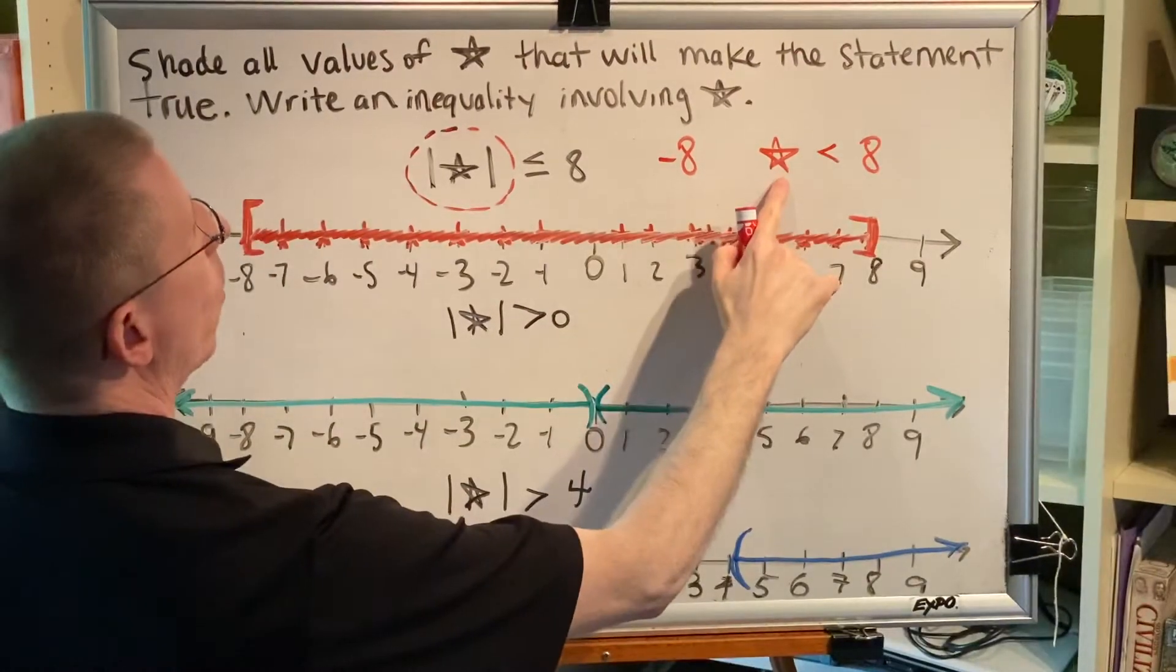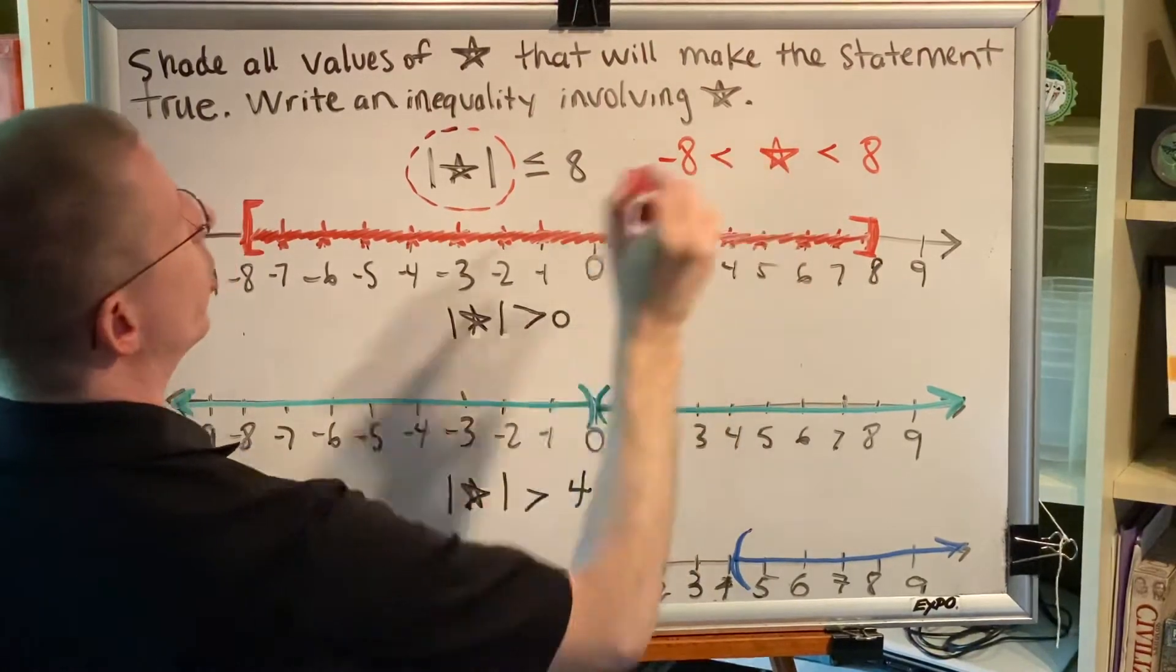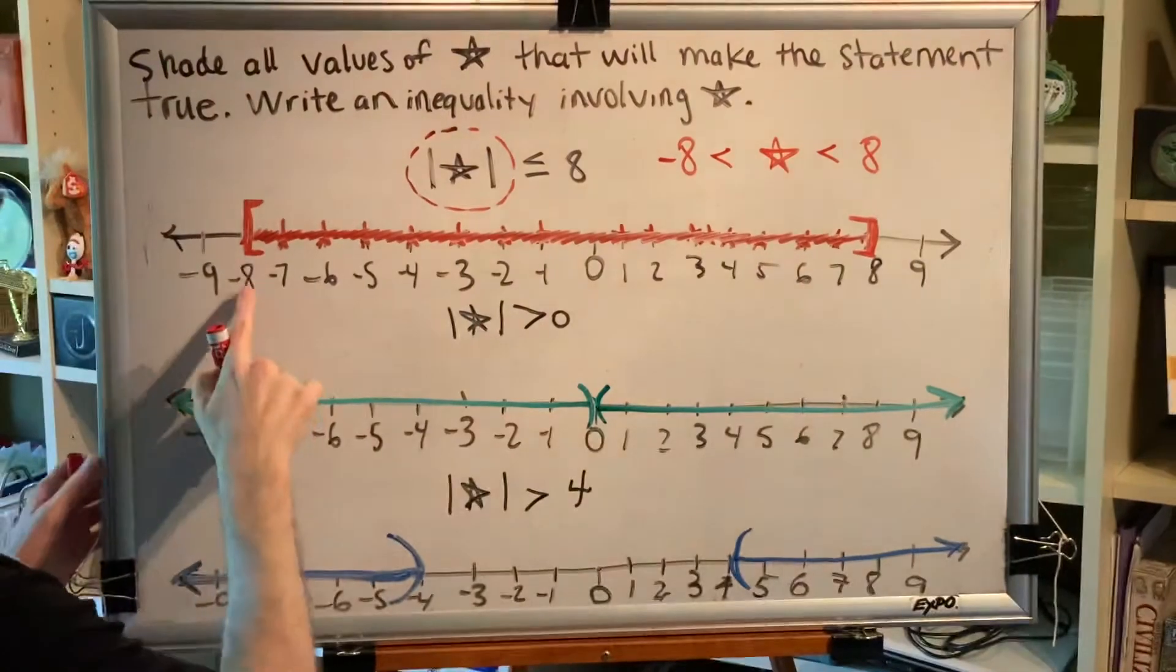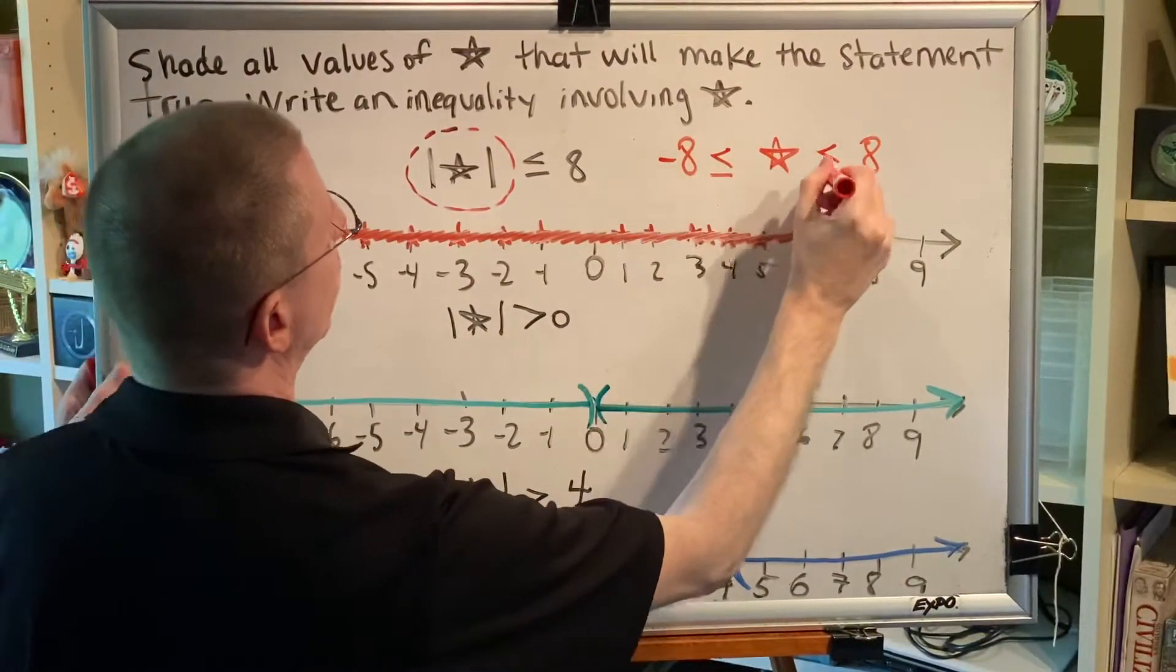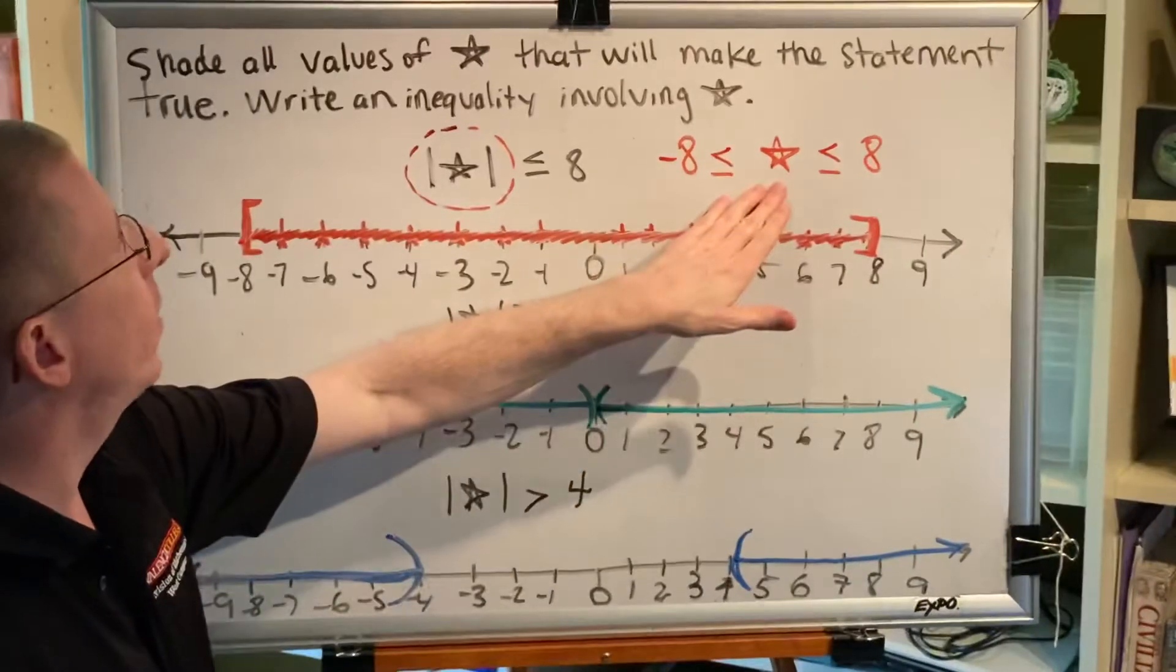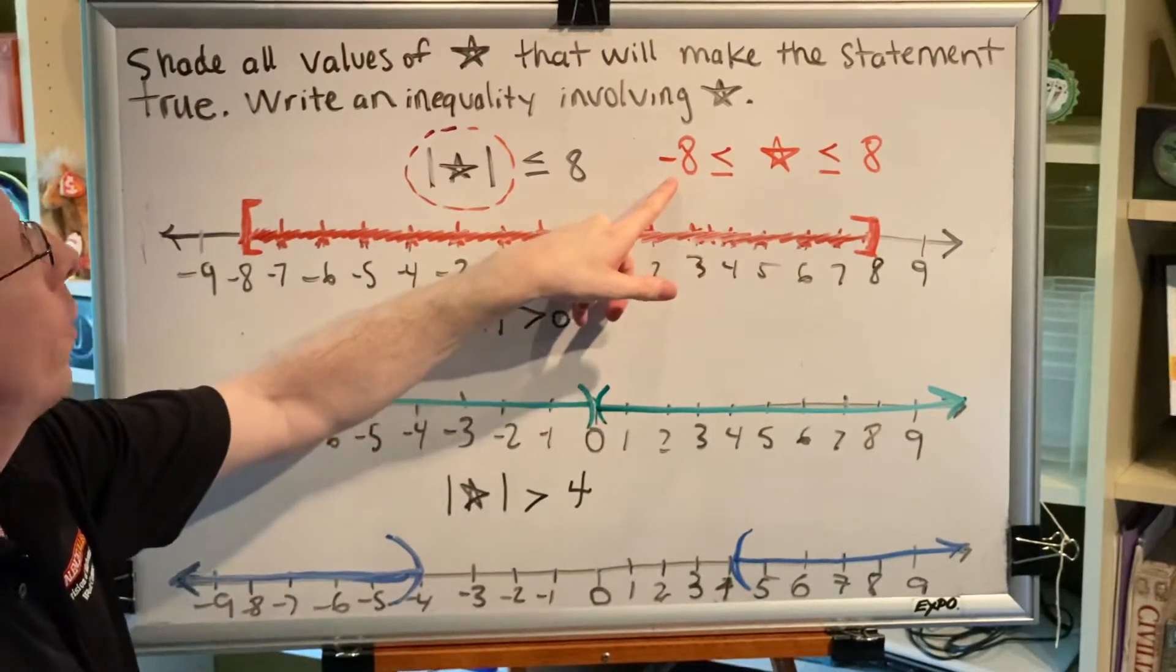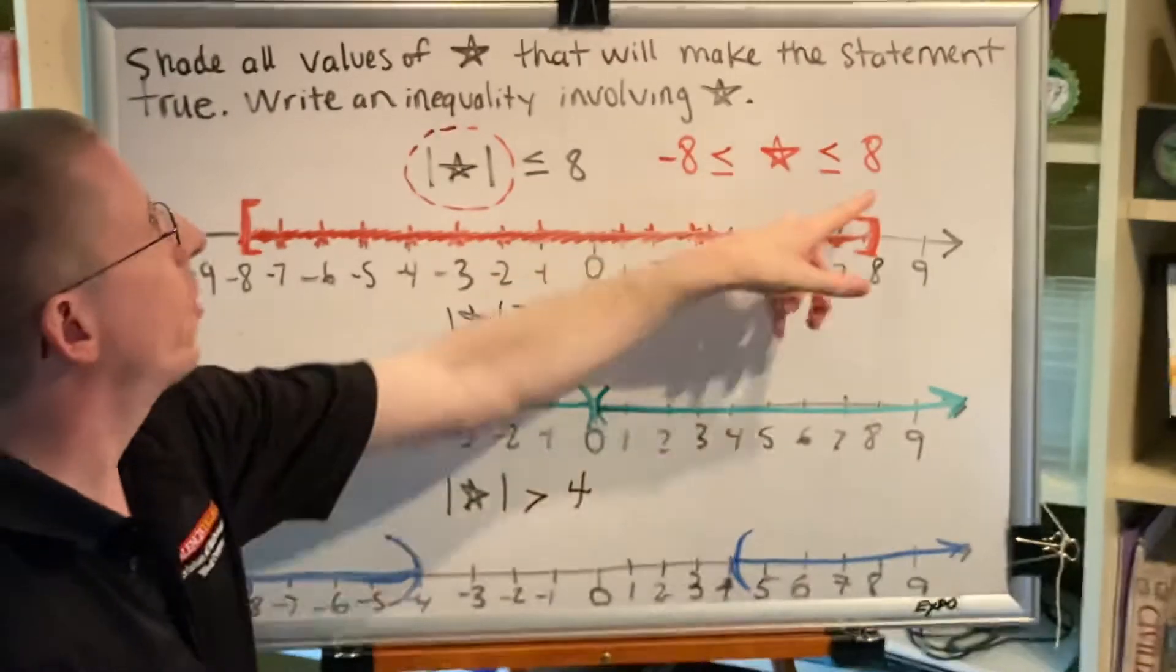And if star was a 0, what would be bigger? Negative 8 or 0? The answer is 0. So we would put this kind of inequality symbol. Of course, since we have brackets on either end on our number line, these would both actually have to be less than or equal to type symbols. So, the inequality that goes with this number line graph is the combined or three-part inequality: negative 8 is less than or equal to star is less than or equal to 8.